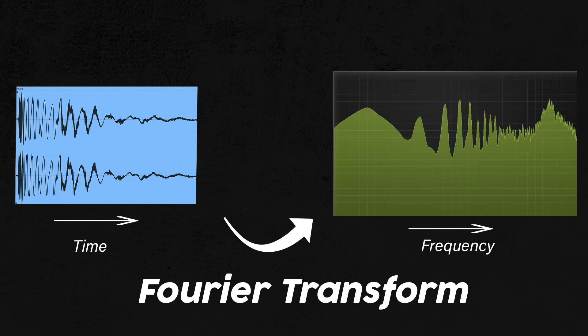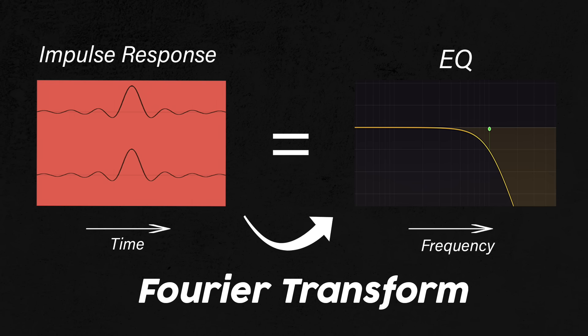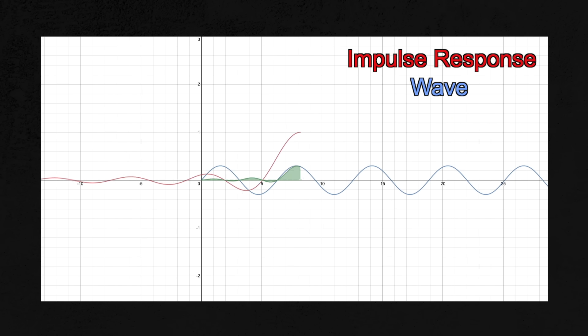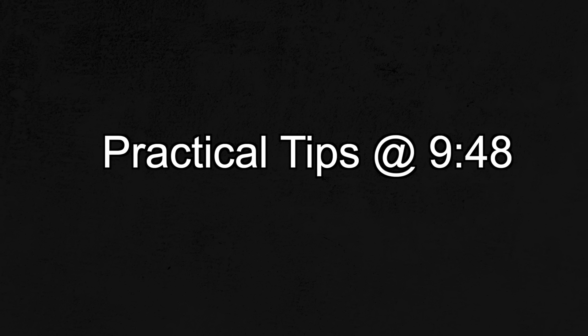Remember how the Fourier transform takes a wave and represents it in terms of its frequencies? The EQ curve you see is the Fourier transform of the impulse response. Put another way, the impulse response is the time representation of the EQ — they're the exact same thing, just represented in different ways. So when you hear 'impulse response' in this video, you can think 'EQ curve' in your mind. Going back to what I said earlier: EQ means convolving a sound with its impulse response. As the sound plays, we slide the impulse response past the wave and multiply it with the original wave, and the wave we get out is the EQ'd wave.